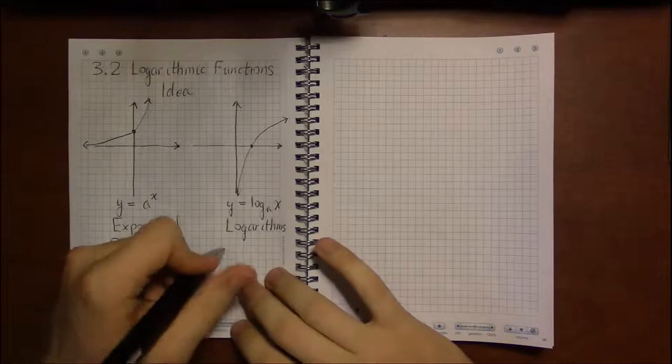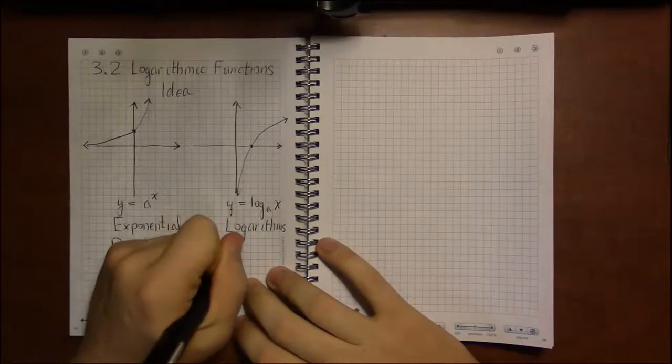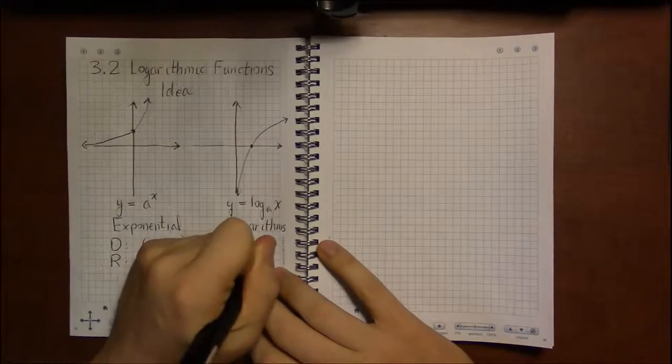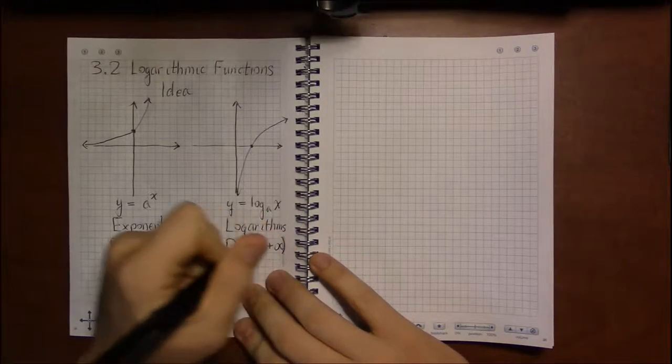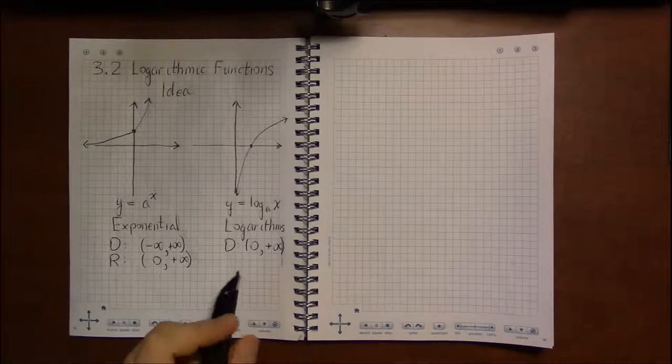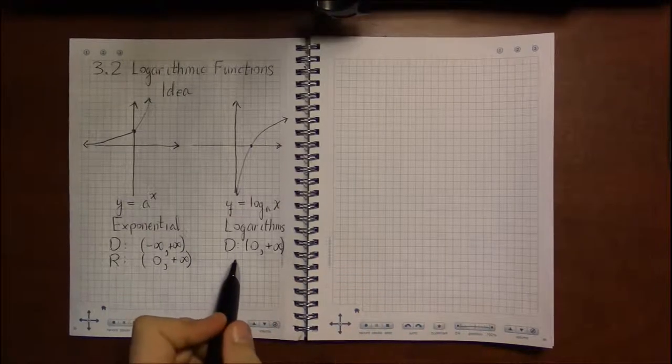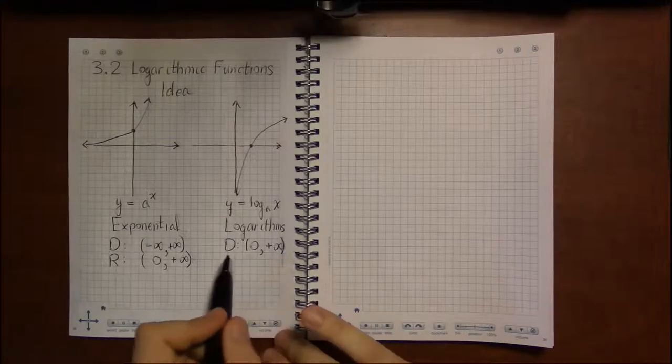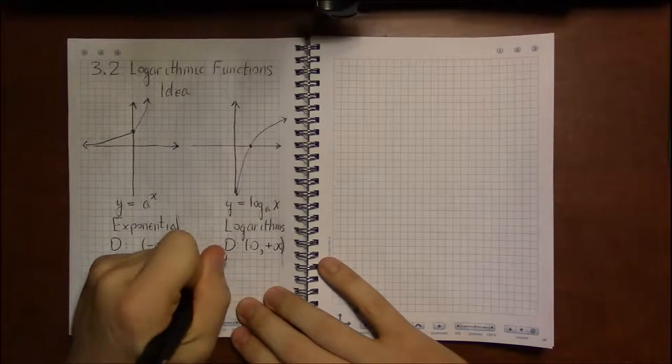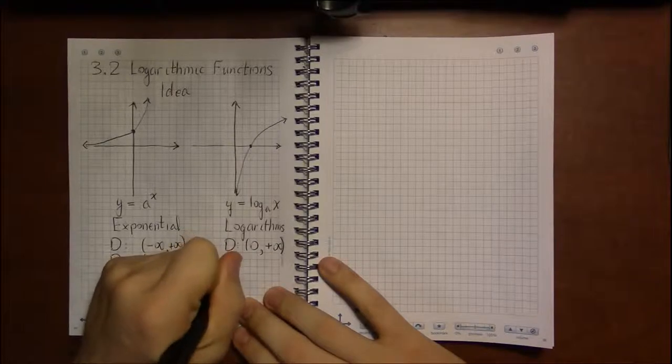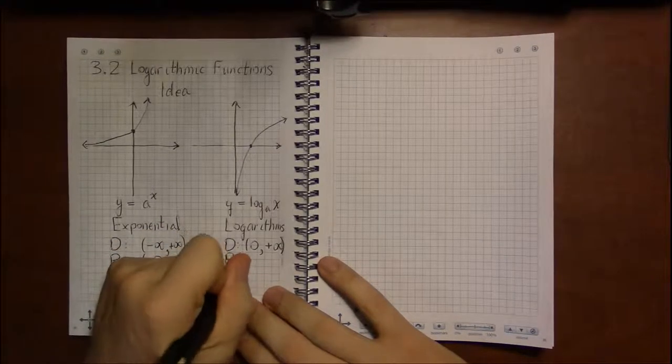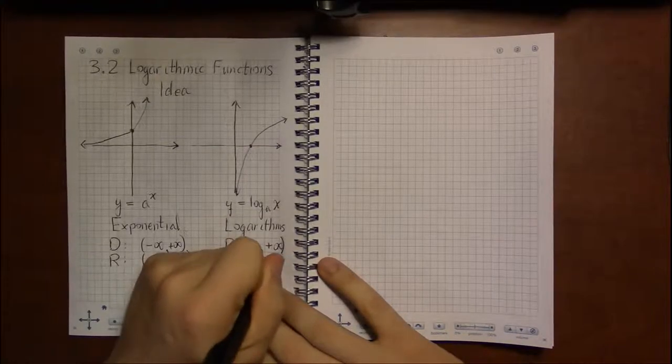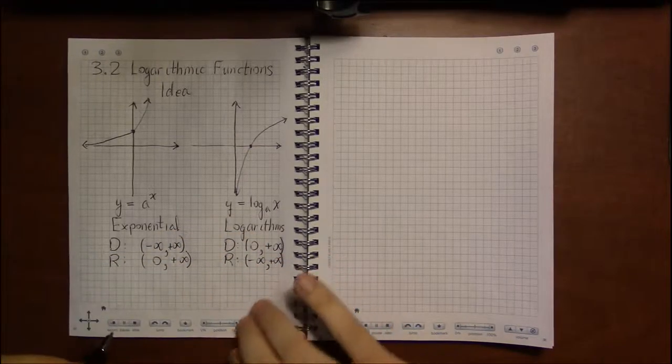Logarithms, these two things are switched. The domain of a logarithm, you can only take the logarithm of a positive number. So this ends up being a new restriction for us. Before, we only had can't divide by zero, and you can't take square roots of negatives. Well now, we have a new restriction. You can't take the log of a negative number, and you can't take the log of zero. You're only allowed to take the log of a positive number.